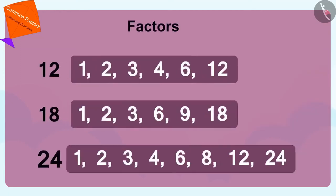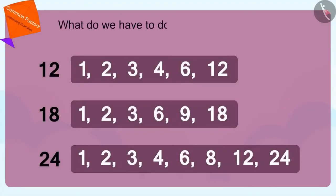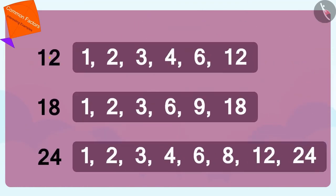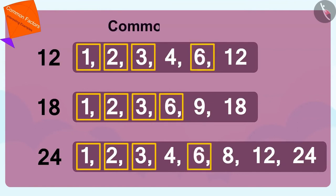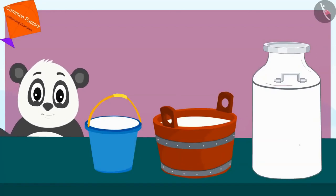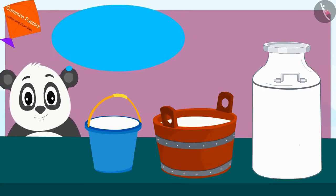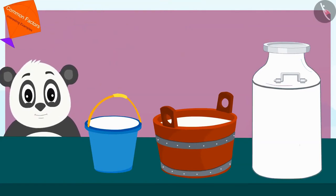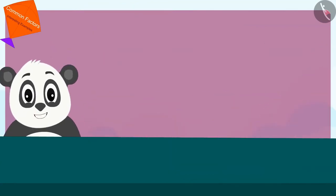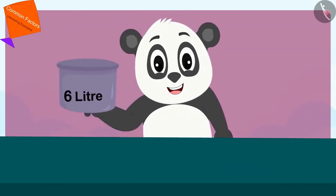First, we will write the factors of 12, 18 and 24. What do we have to do to find the utensils that Golu can use to measure milk? We need to find common factors of 12, 18 and 24. 1, 2, 3 and 6 are common factors of these numbers. I can easily measure the milk filled in these pots using a pot of 2, 3 or 6 liters, and the largest of these is a capacity of 6 liters, so we can definitely measure the milk filled in these utensils with a 6-liter vessel.